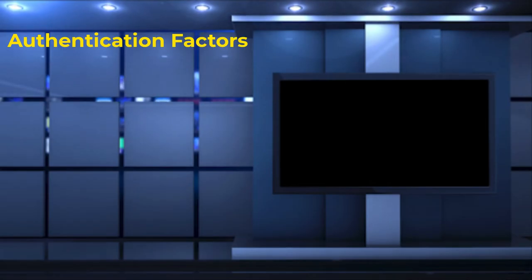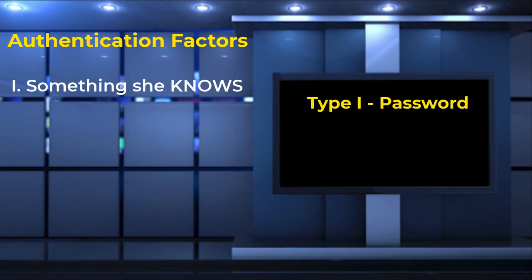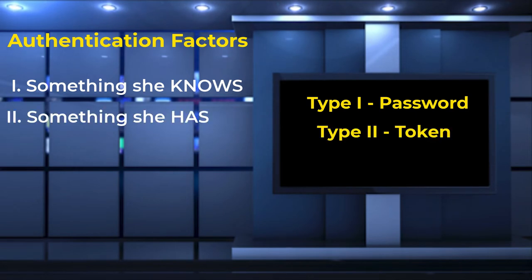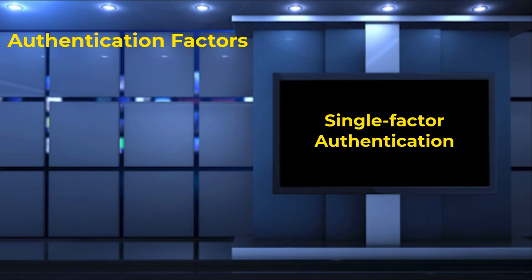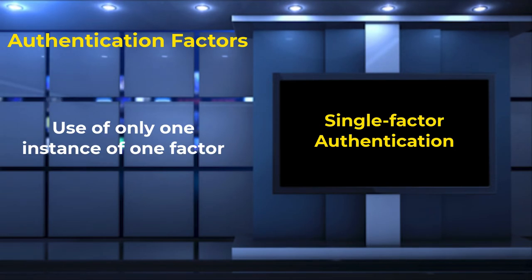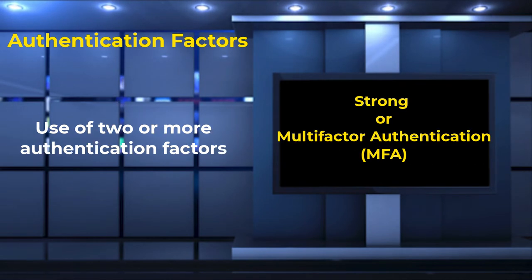We use one or more of three factors to enable subject authentication. Type 1 is something the subject knows, like a password or PIN. Type 2 is something the subject has, like a smart card or one-time password generator. Or Type 3, something you are, or biometrics. Use of one factor is known as single-factor authentication. Strong authentication uses two or more of these factors, driving down the probability that a threat actor can compromise the credentials to gain access.